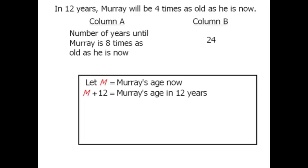So here's Murray's current age, and here's his age in 12 years. At the moment, these two ages are not equal. The question tells us that his future age here is 4 times his current age. So if we take his current age and multiply it by 4, then these two ages will be equal.